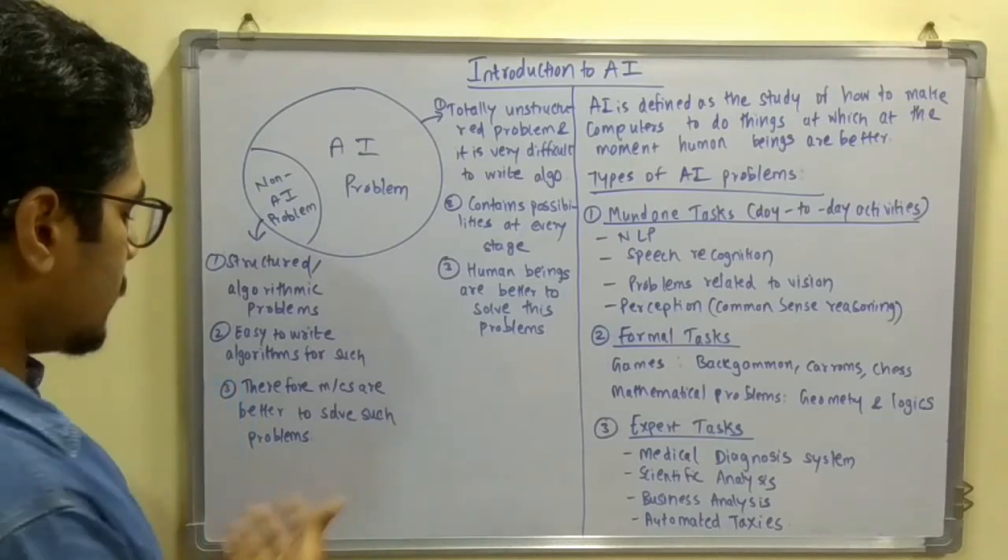But when it comes to AI problems, which are mostly unstructured and do not fit into any algorithms, mostly trial and error kind of problems. We have seen many cryptarithmetic problems, eight puzzle problems, so somehow it is incorporated into machines so that learning needs to be explicitly incorporated into these machines.